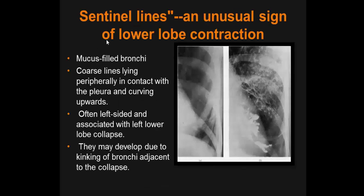Central lines are an unusual sign of lower lobe contraction: mucus-filled bronchi producing coarse lines lying peripherally, in contact with the pleura and curving upward. They are often left-sided and associated with left lower lobe collapse. They may develop due to kinking of bronchi adjacent to the collapse.